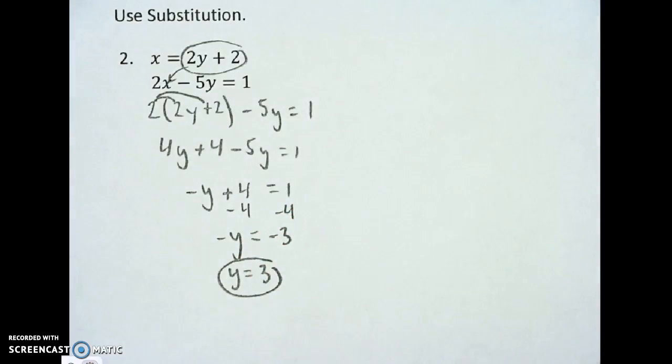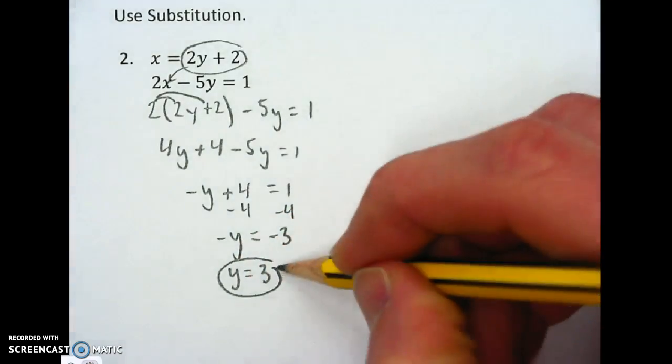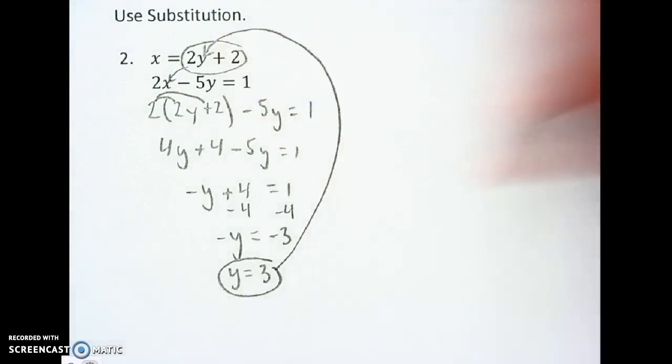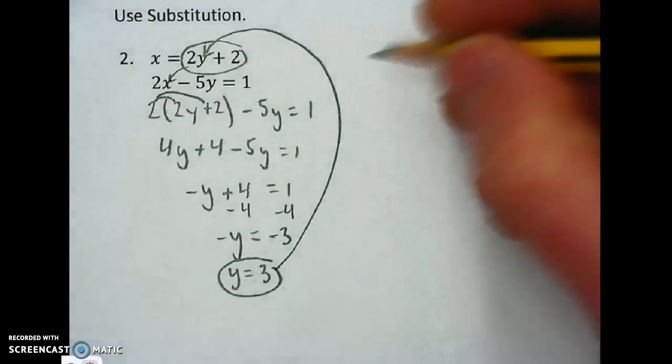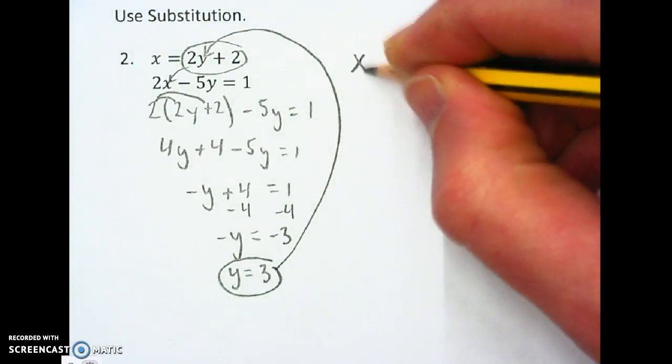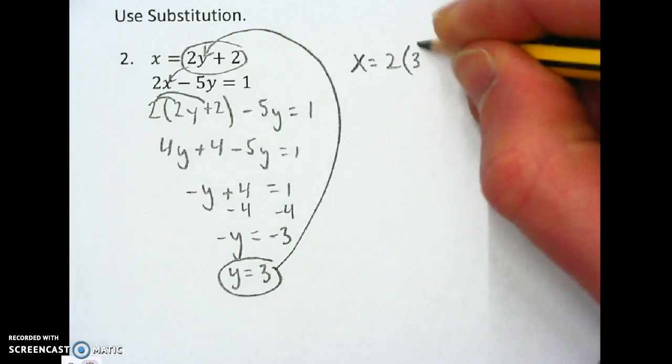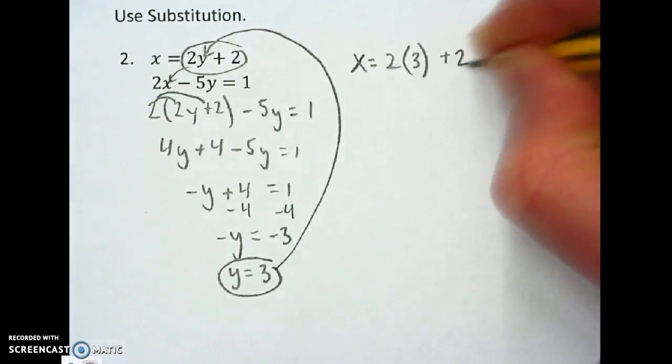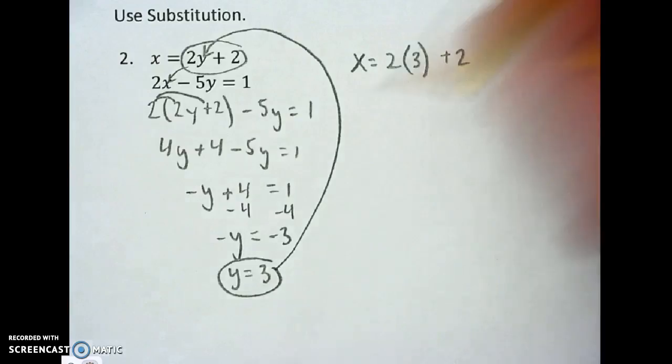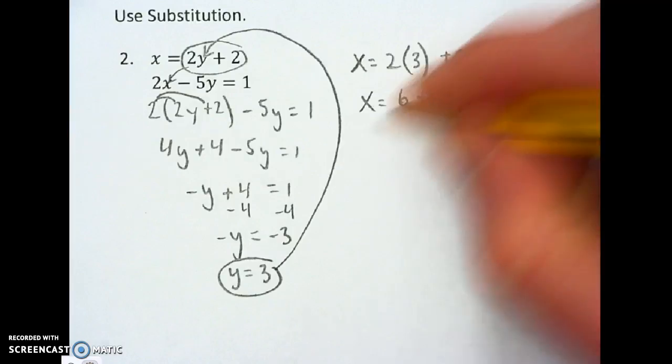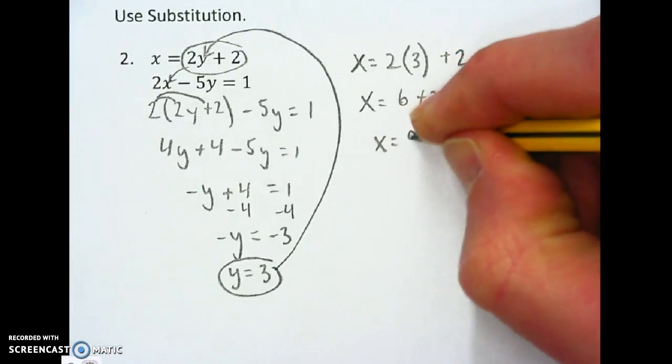Now that I've got my y value, I'm going to plug that back in right up here in that y spot to get me my x value. So I'm plugging in my y. I've got x equals 2 parentheses 3 plus 2. So x equals 2 times 3, which is 6, plus 2, x equals 8.